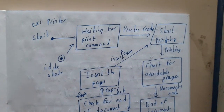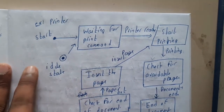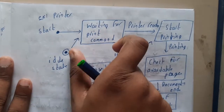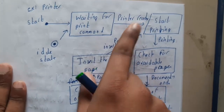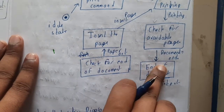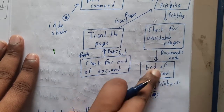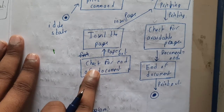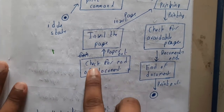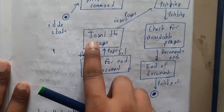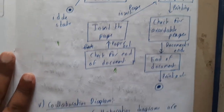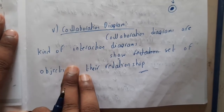For example, a printer: initially you're in an idle state, waiting for a print command. Once the print command is given, printing starts. You check for available pages — if pages are available, you print; otherwise you end. If papers run out mid-document, you check end-of-document, display paper-out, insert paper, and continue printing.